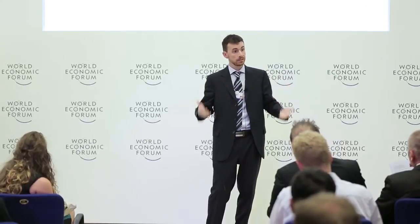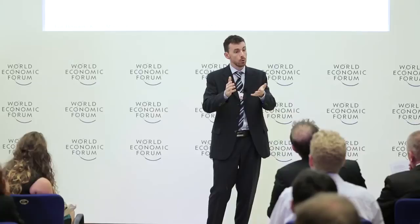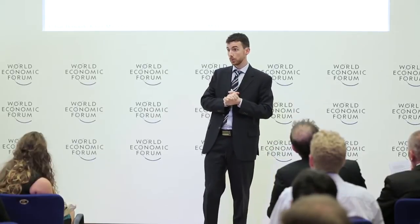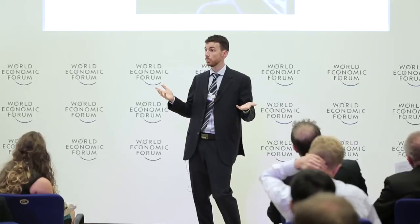Different techniques can then be used to scale that up to the neuron network level — first neuron interaction, then small networks, large networks, and eventually cortical columns. This is actually done by the Blue Brain Project, originally, now the Human Brain Project in Europe, from which these pictures have been taken. Once you know that at the large network level, you can finally reach the brain level and map electrical signals at the organ level to pathologies of traumatic brain injury, such as short-term memory loss, epilepsy, or even headache.